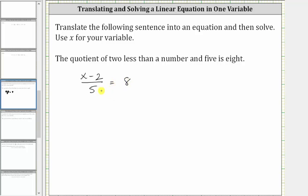And now we need to solve the equation for x by isolating x on one side of the equation. Let's begin by clearing the fraction from the equation. Since the denominator is five, we will multiply both sides by five.